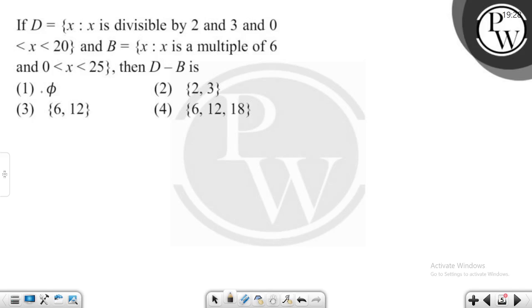Hello, so let us see that if D equals to x such that x is divisible by 2 and 3 and 0 is less than x is less than 20, and B equals to x such that x is a multiple of 6 and x lies between 0 to 25, then D minus B is what?